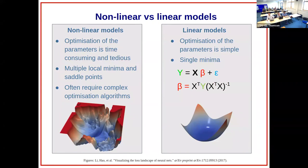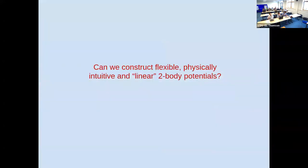Optimization is simple, and one of the main benefits is that you have a single global minima in these cases. You don't have to search or do a global optimization search - you can get the global minima, and that's the key benefit. So the question we could ask is: can we construct something that's flexible, physically intuitive, linear, and two-body?